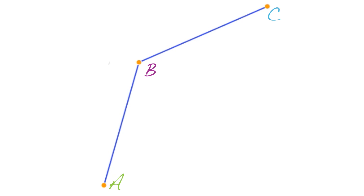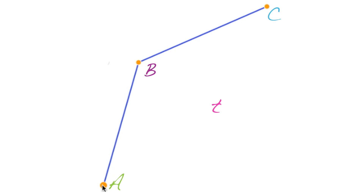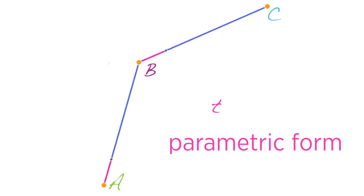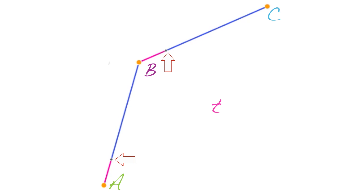Let's label our points A, B, and C. We've also got a parameter we'll call T, which is how far along each line segment we are. We can calculate a point on AB using a weighted average of these two endpoints. This is another kind of linear interpolation, but instead of using the slope-intercept form, we're using what's called a parametric form. The parameter is T, which tells us how far along the line we are.